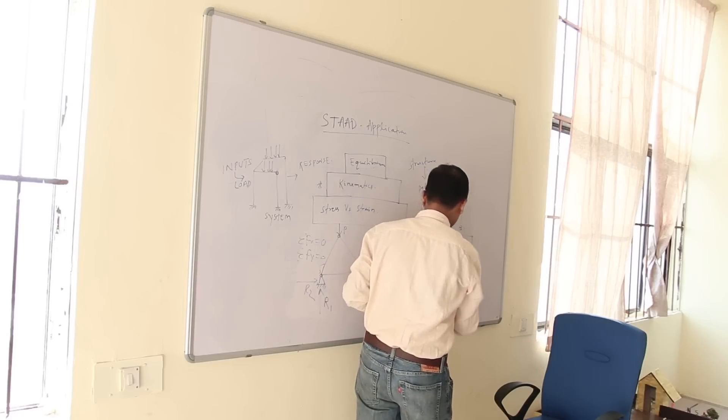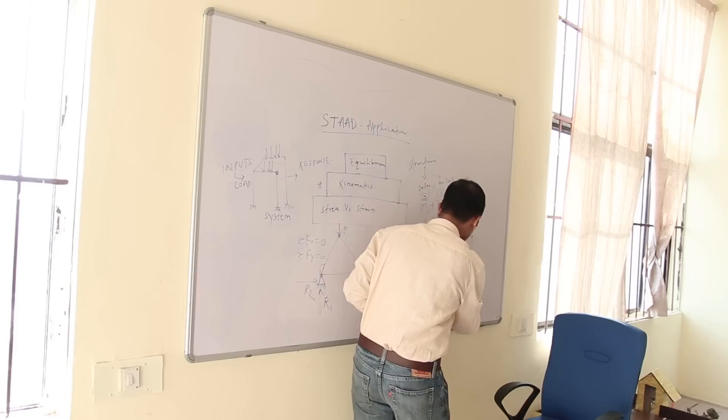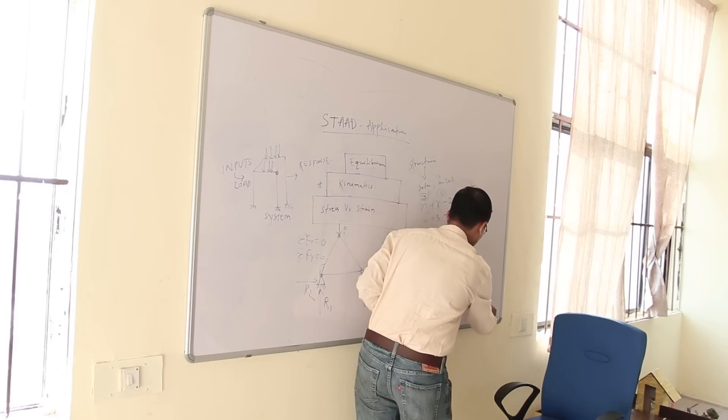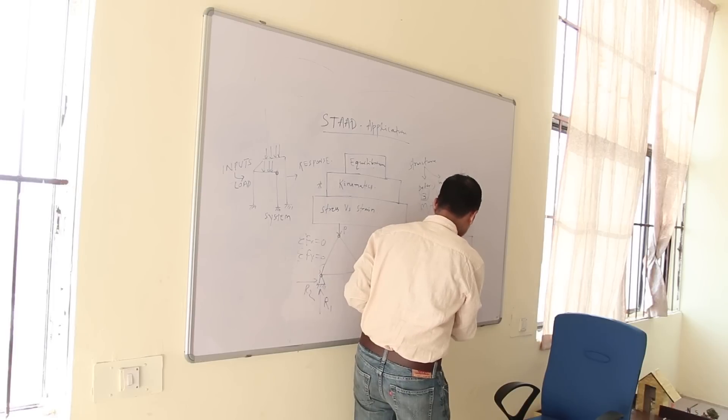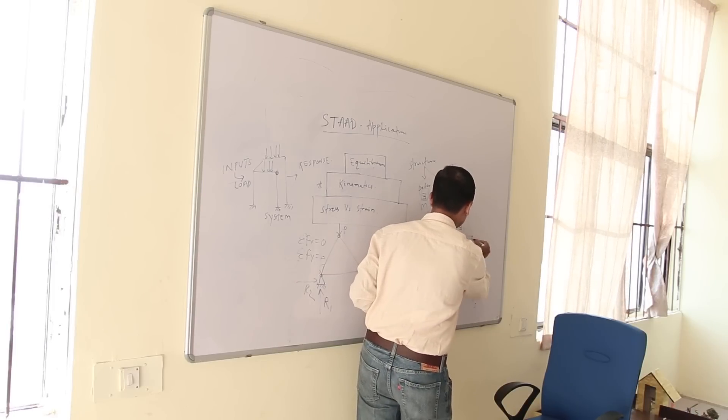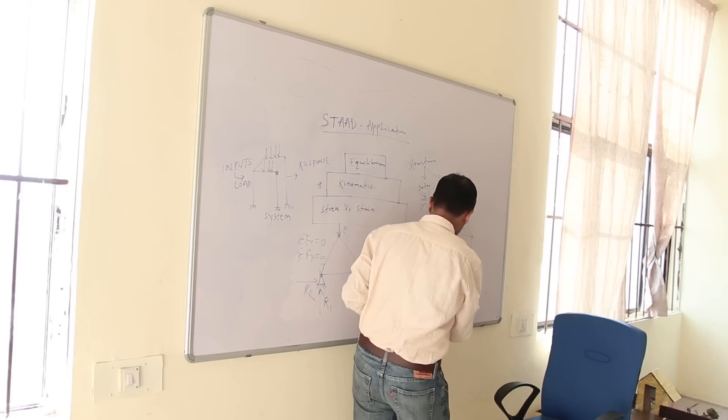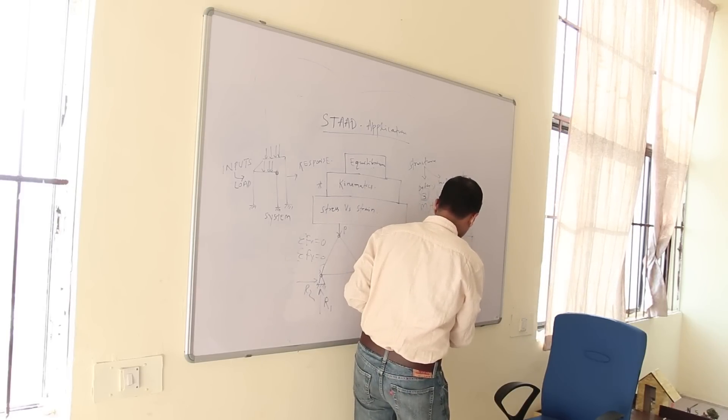So M, members how many? 1, 2, 3. 3 plus equation you are saying R, R reaction 1, reaction 2, reaction 3, reaction 4, plus 4 minus 2 into joint. Joint number 1, 2, 3, 4. So 3 plus 4 is 7 minus 8 equal to minus 1.